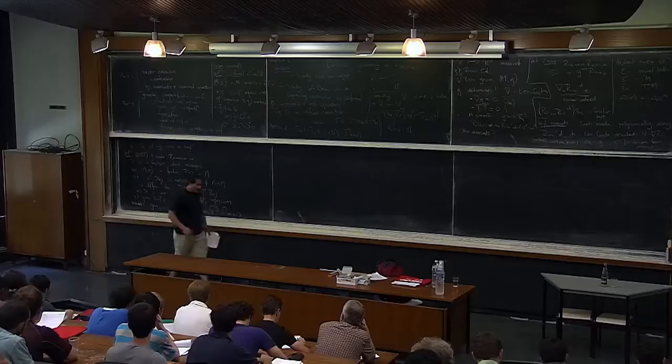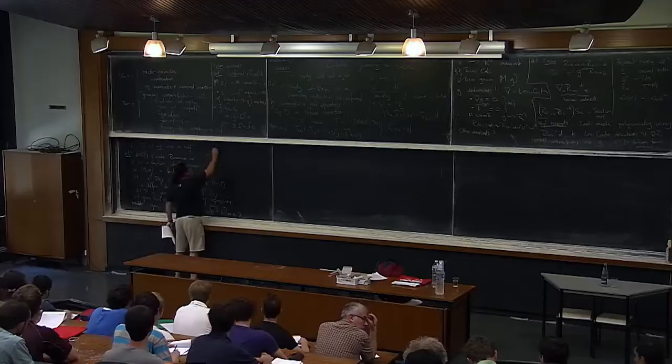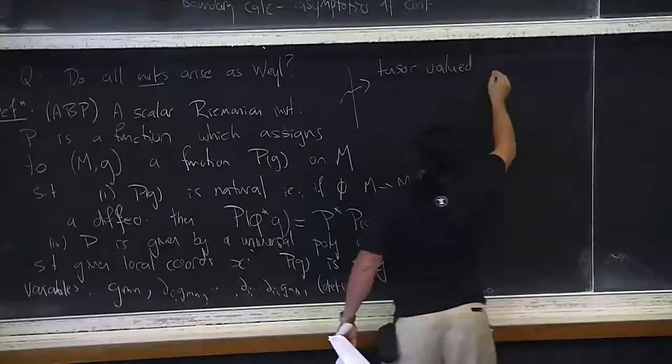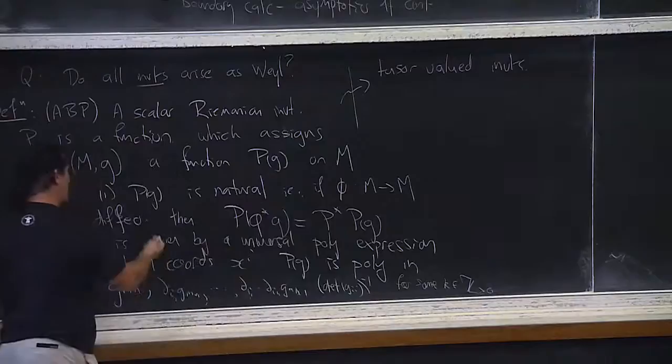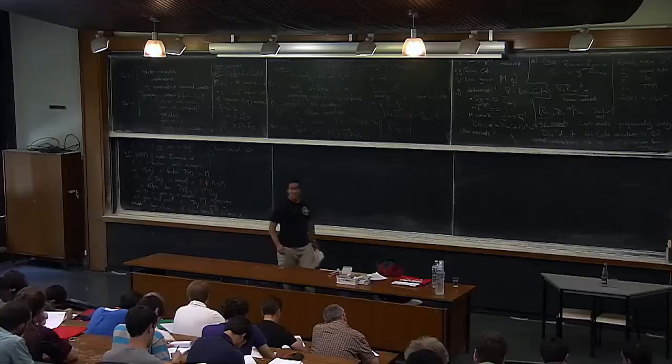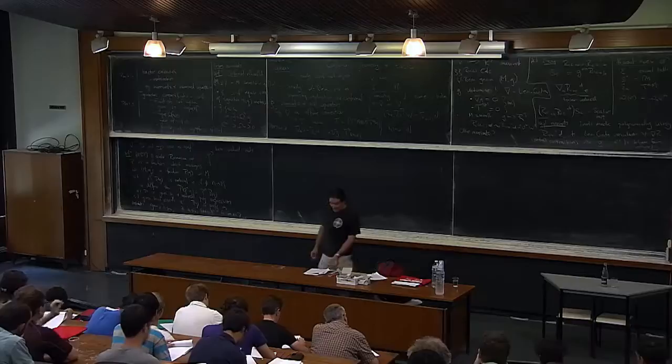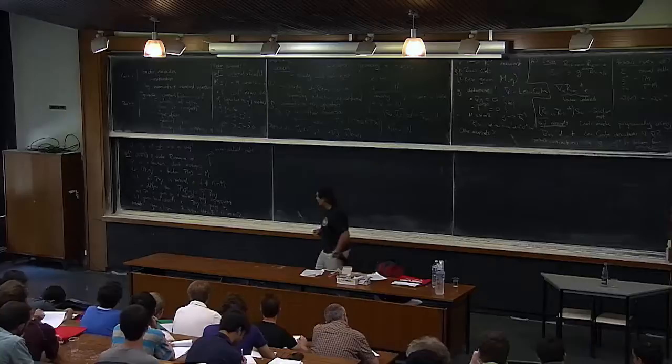So a scalar invariant is a polynomial expression in jets of the metric that produces a function on the manifold — natural in the diffeomorphism sense, and polynomial in the metric components, their derivatives, and the metric inverse. You can easily adapt this to tensor-valued invariants — I'll leave that as an exercise.